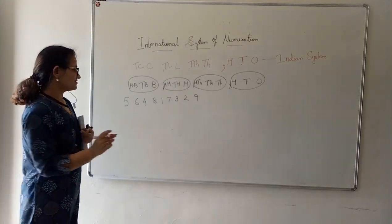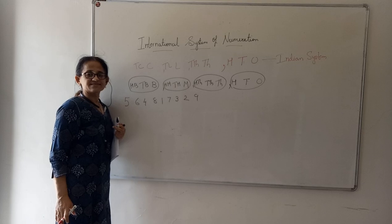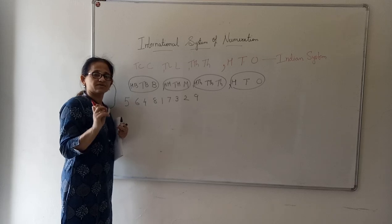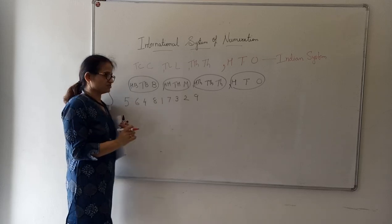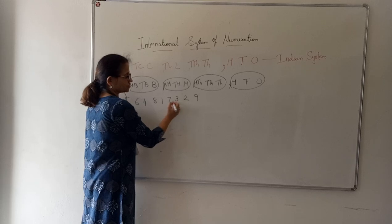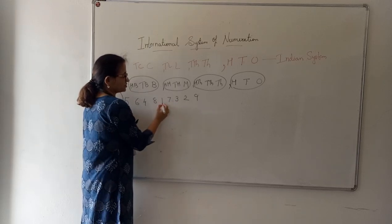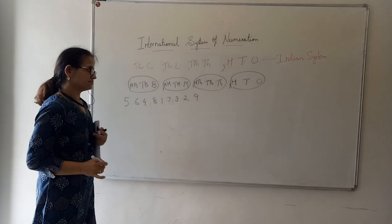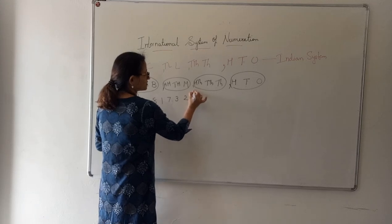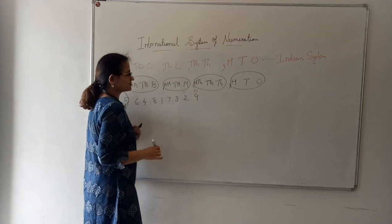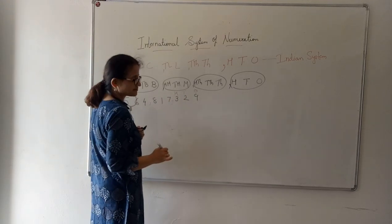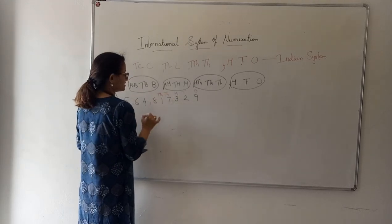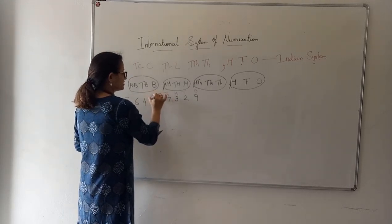First of all, when this type of number is given to us, we will insert commas. In the international system of numeration, a comma will come after every 3 digits. So counting from the back: 1, 2, 3 — comma; 1, 2, 3 — comma; 1, 2, 3. That means 9 is at the 1's place, 2 is at the 10's place, 3 is at the 100's place, 7 is at the 1,000's place, 1 is at the 10,000's place, and 8 is at the 100,000's place.